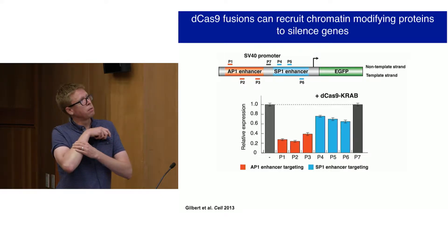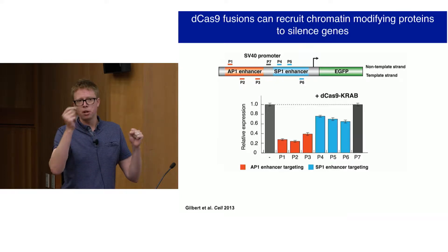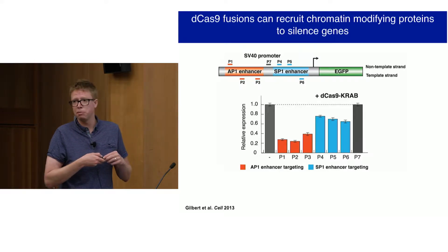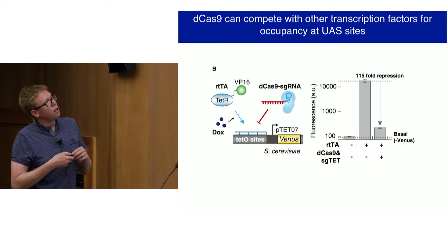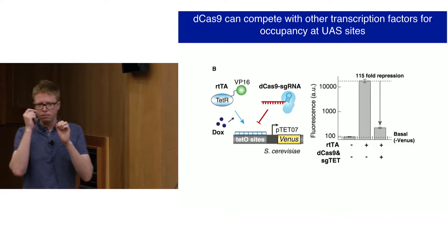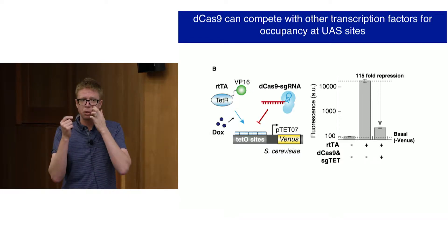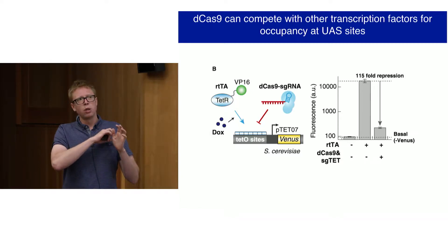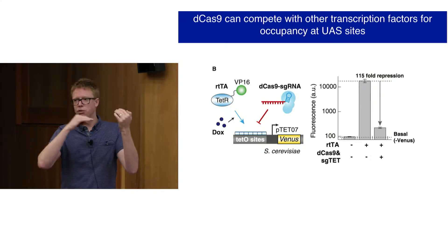Similar to what I showed in bacteria, we wanted to know whether we could target promoters to silence transcription — not by targeting a gene body but by targeting a promoter. Using the well-characterized SV40 promoter driving GFP expression, we could turn off transcription by targeting various sites along the promoter. We were also interested in whether we could use dCas9 alone in a eukaryotic cell to compete with an endogenous transcription factor for a binding site at a promoter, probing whether we could map regulatory regions by competing two proteins for a specific binding site.